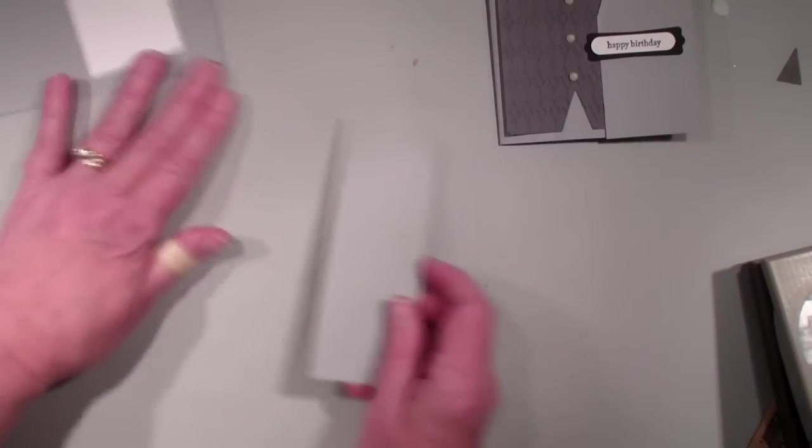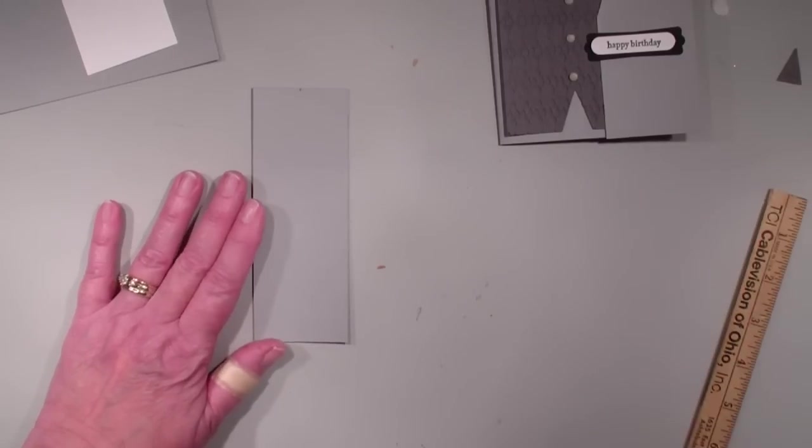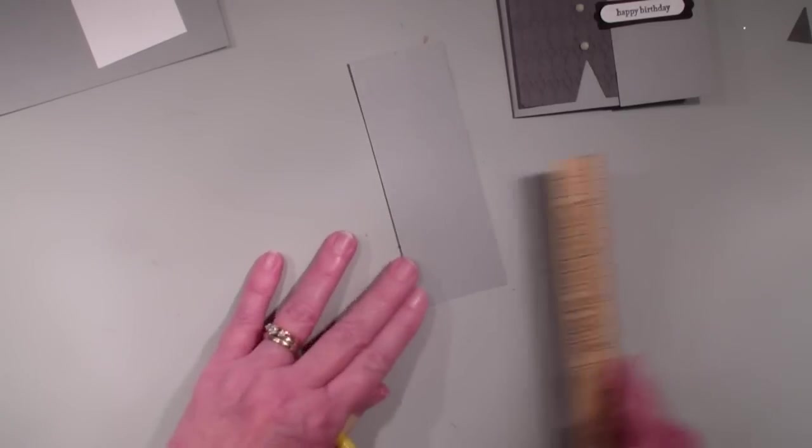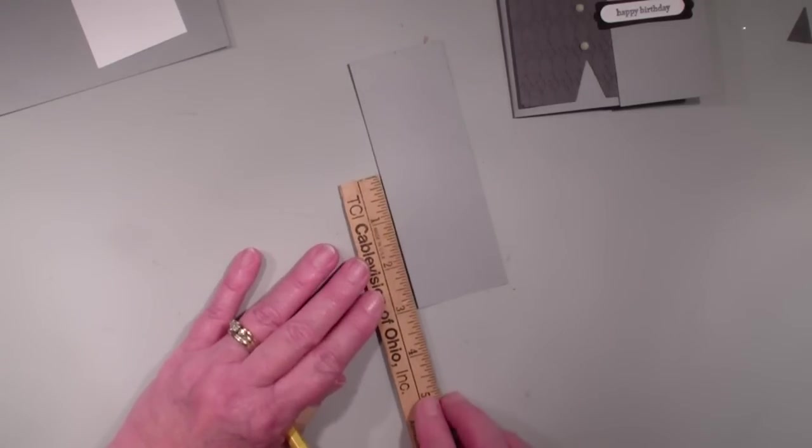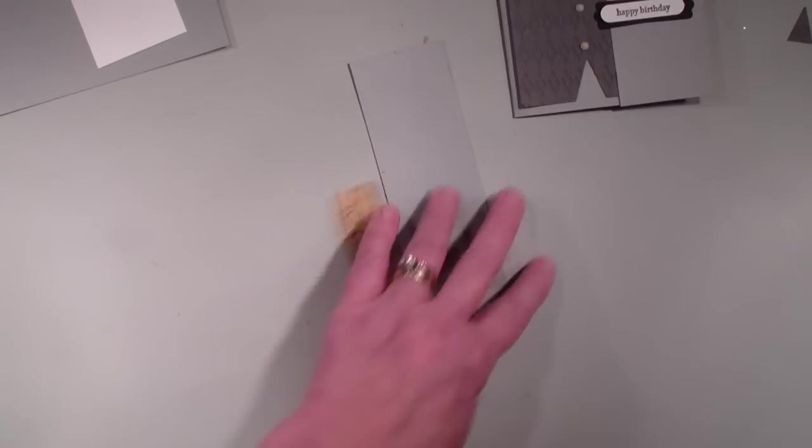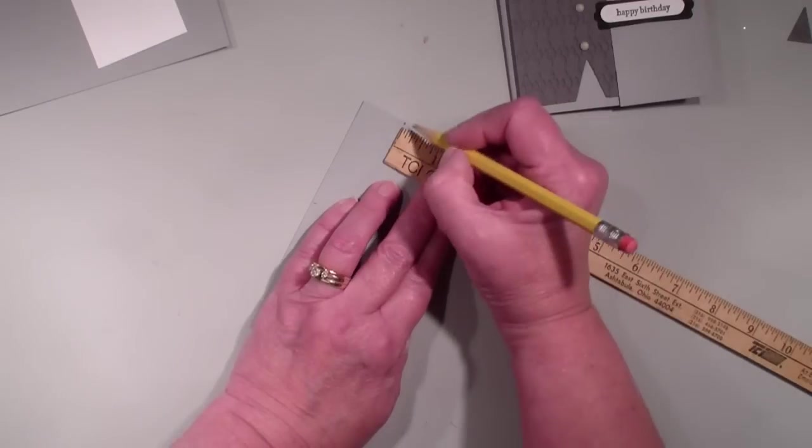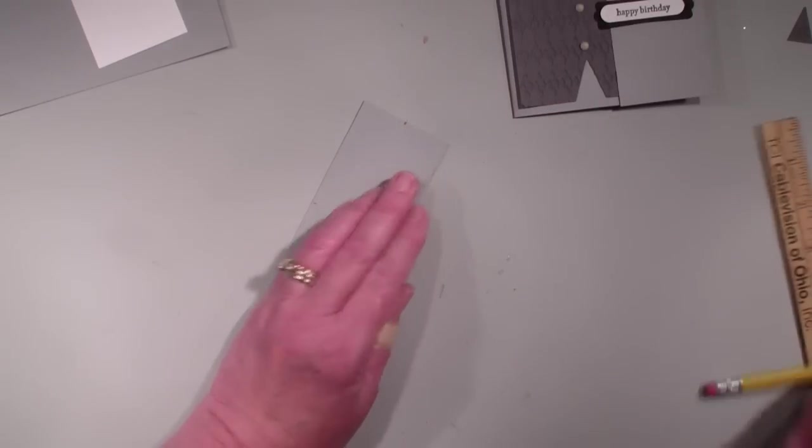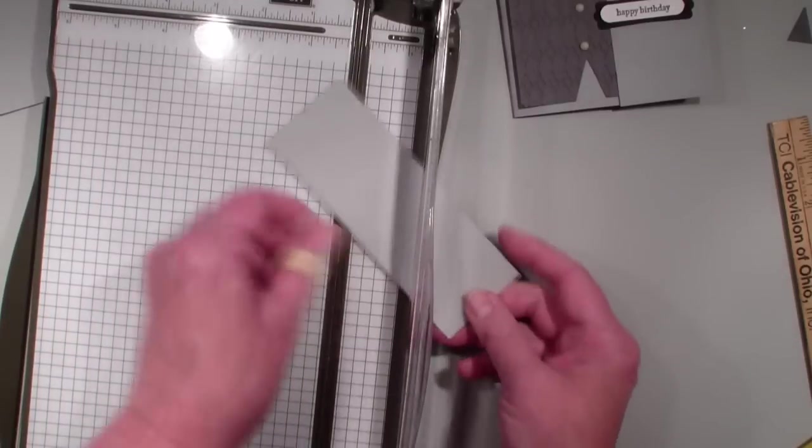Next thing I'm going to do is I'm going to bring in that piece of basic gray and I'm going to measure up 3 inches and I'm going to make a little mark, and then I'm going to go up here at the top and make another mark at the 1 inch. I'm going to use that as a guide with my paper trimmer.